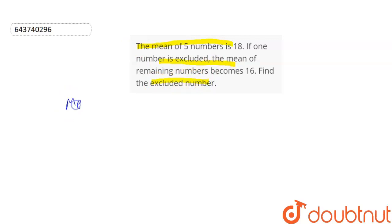In this question, mean of five numbers is given to be 18. We know that mean is sum of observations upon total number of observations. Here, sum of five observations upon total number of observations, that is 5, is equal to 18. So, sum of five observations comes out to be 18 into 5, that is equal to 90.